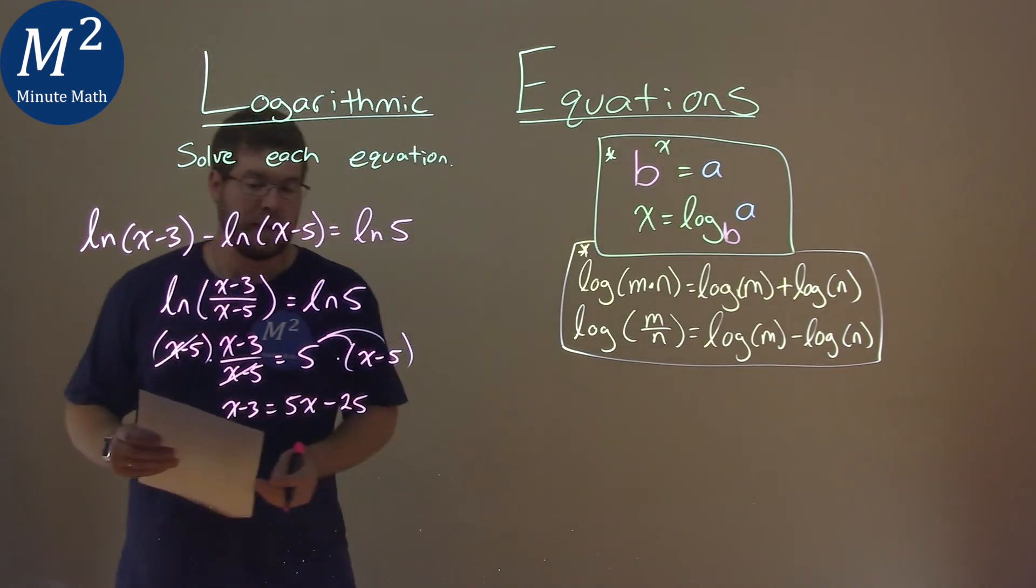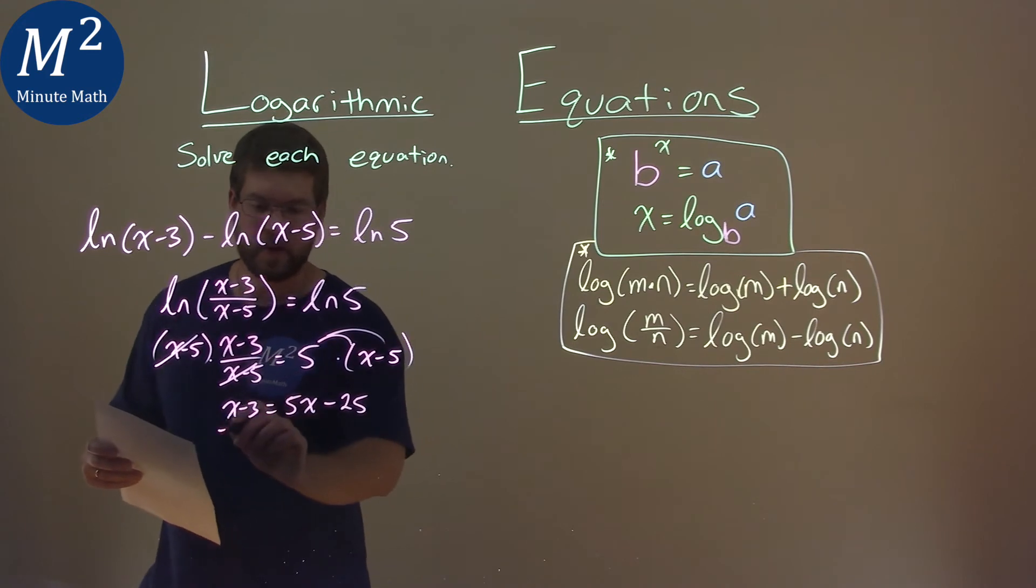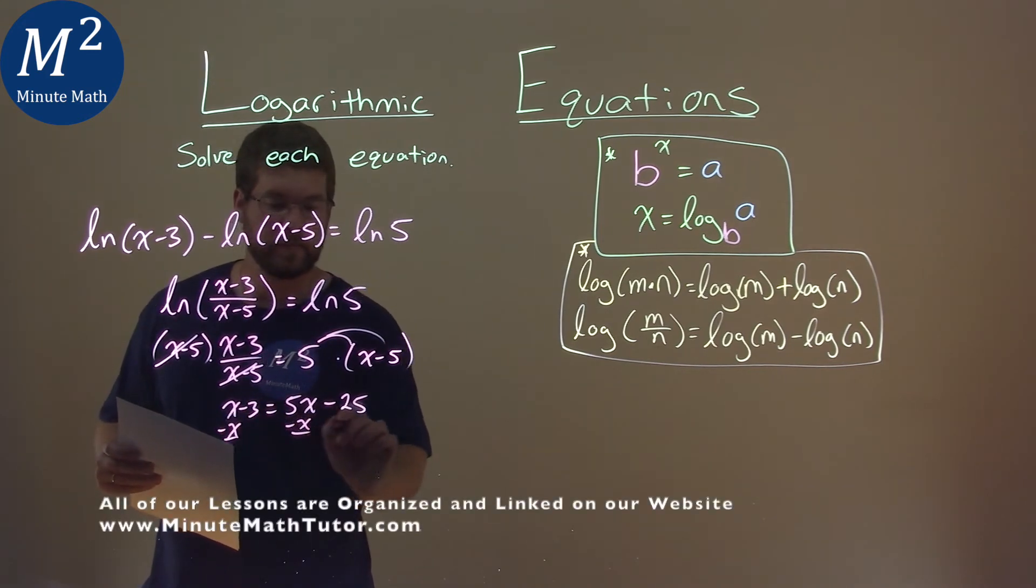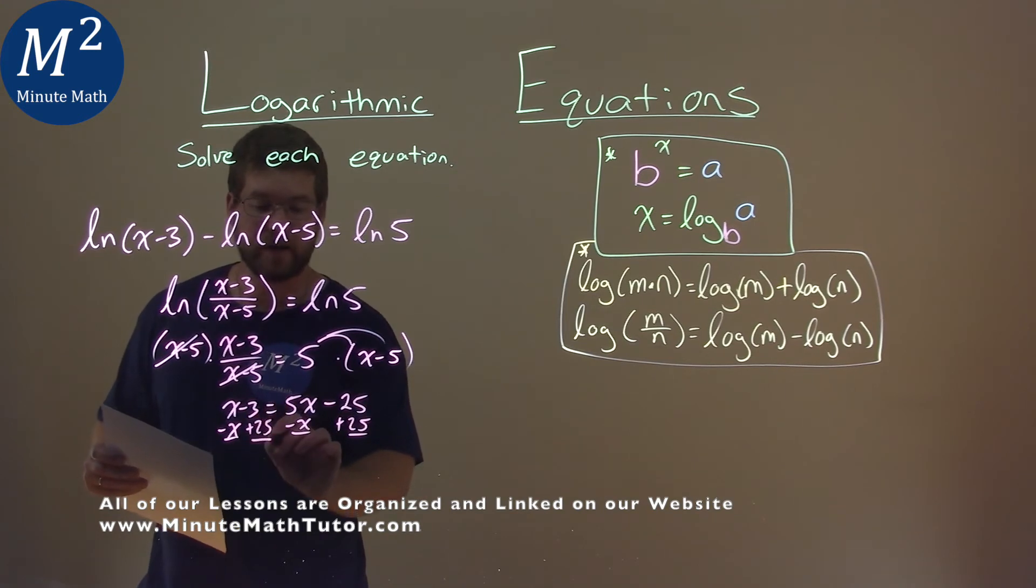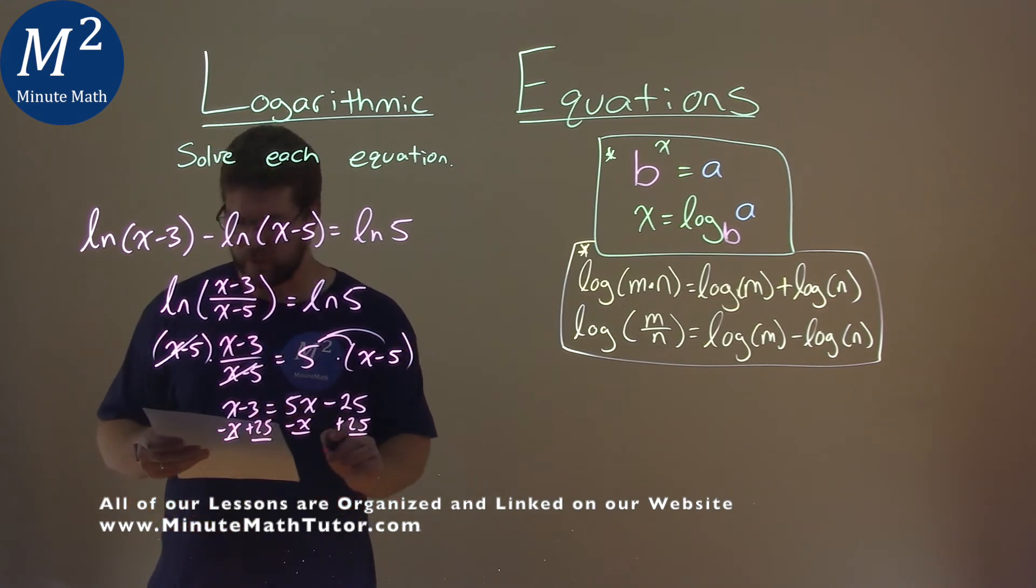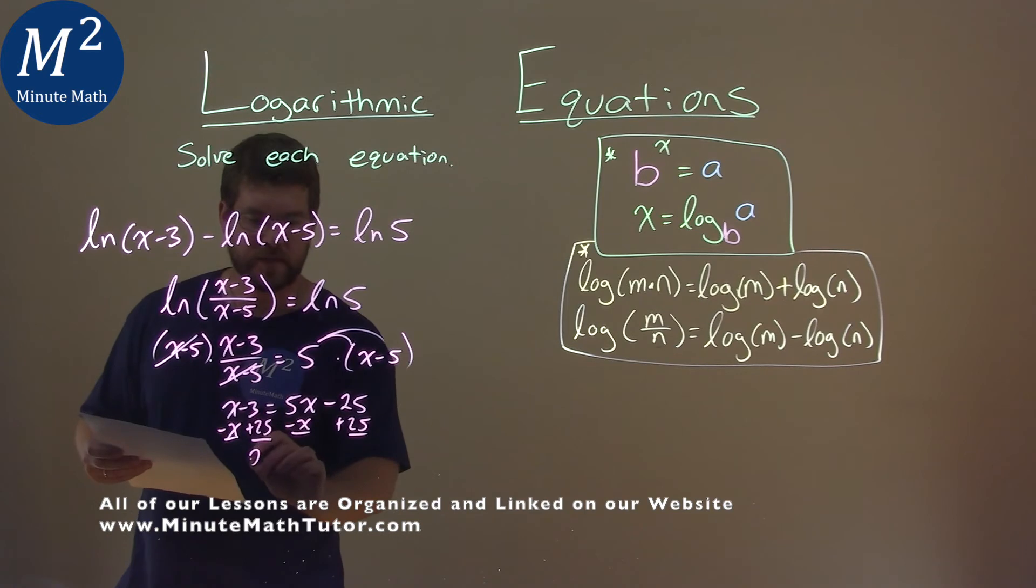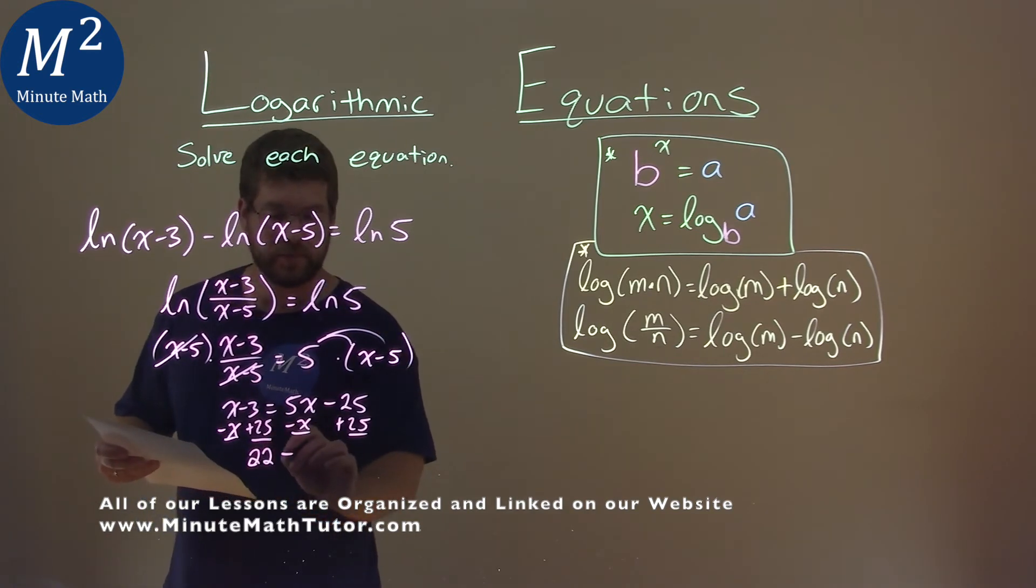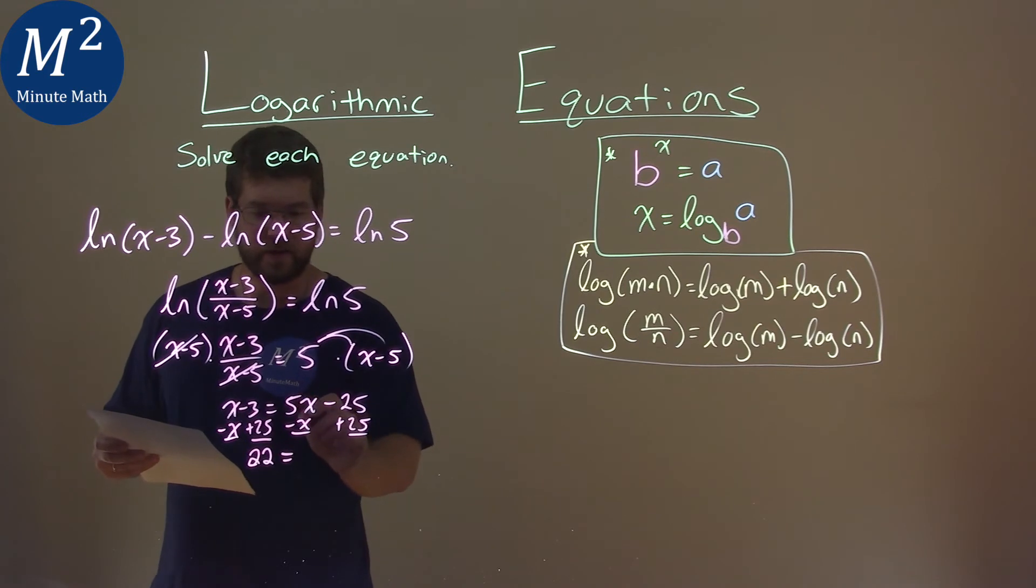Now, let's go combine our like terms together. I'm subtracting x from both sides, and add 25. Remember, we're solving for x. Negative 3 plus 25 is 22. And that's equal to 5x minus x, which is 4x.